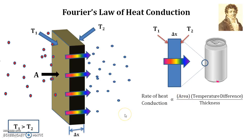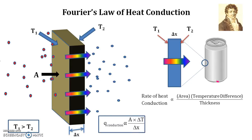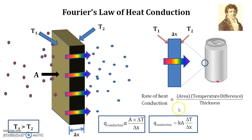From these observations we can write the dependence: the rate of heat conduction is directly proportional to area A, directly proportional to temperature difference delta T, and inversely proportional to thickness delta x. Writing this in numerical form: Q conduction is proportional to A times delta T divided by delta x. Removing the proportionality sign, we introduce a constant of proportionality k, known as thermal conductivity, which is a measure of the ability of a material to conduct heat.